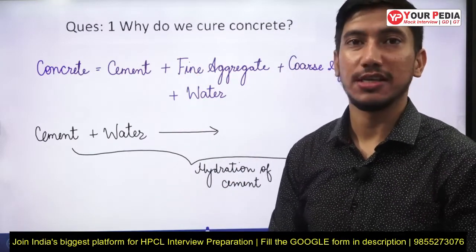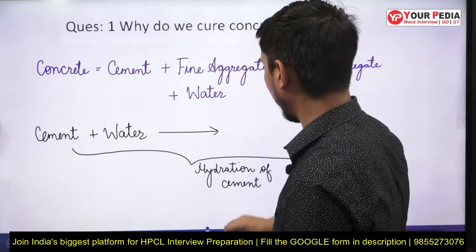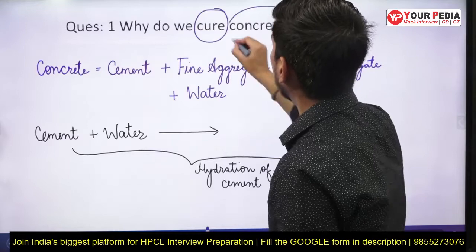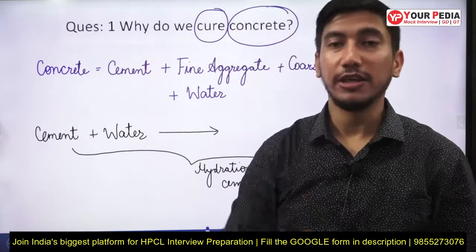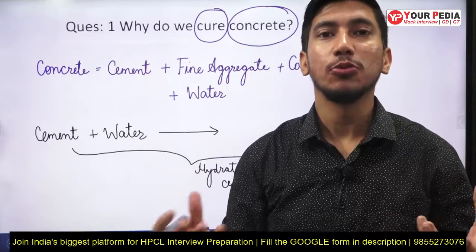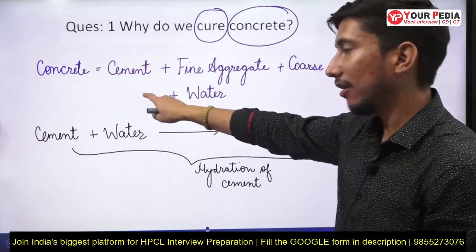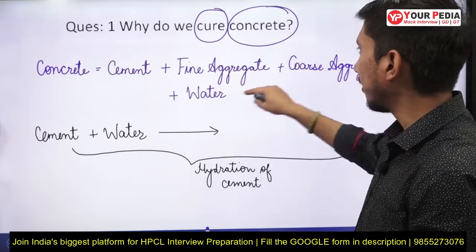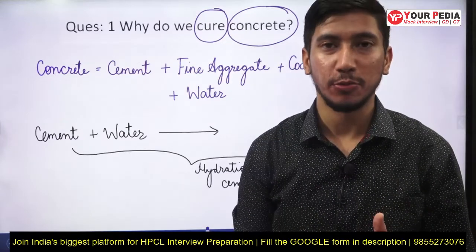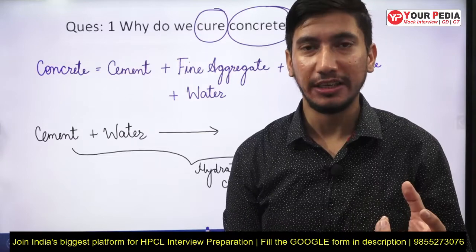Before I answer this question, we need to understand two important terms: curing and concrete. Let's discuss concrete first. Concrete is basically a composite material — it is formed when we mix cement, fine aggregate, coarse aggregate, and water together in certain proportions.